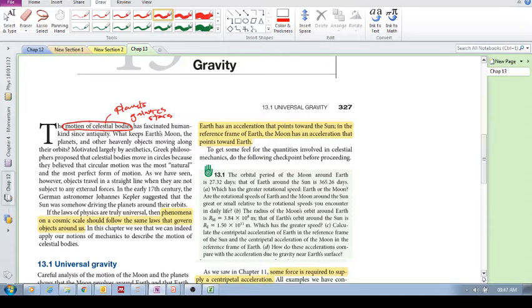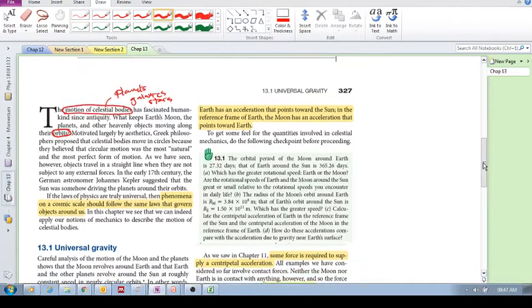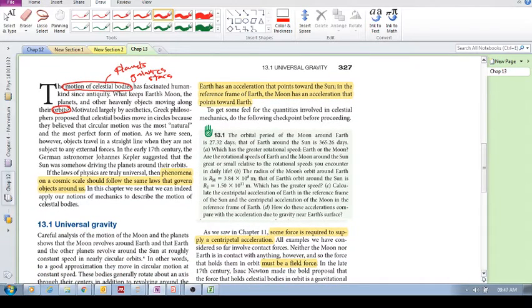So why do celestial bodies move the way they do? Why, for example, does the Earth's moon behave the way it does? Why does it keep its specific orbit around the Earth? Why does the Earth have its specific orbit around the sun?